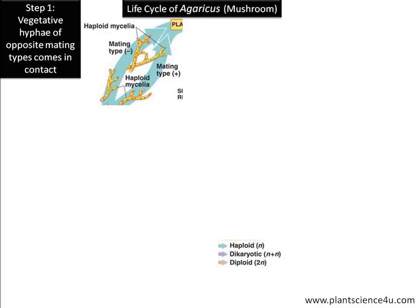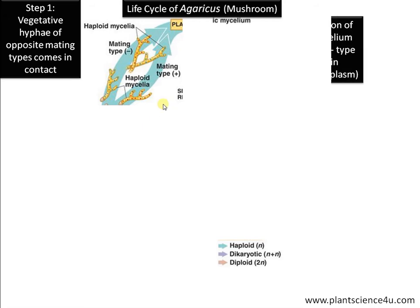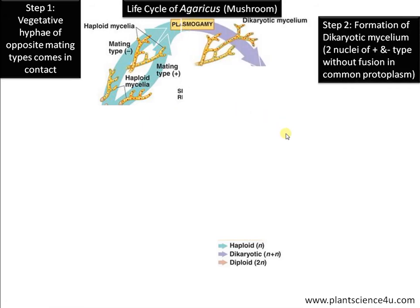...a fusion of vegetative hyphae, or somatic hyphae, of opposite mating types. Hyphae of opposite mating types come in contact, as there are no well-developed or specialized sex organs in Agaricus. Step 2 is the formation of dicharyotic mycelium.